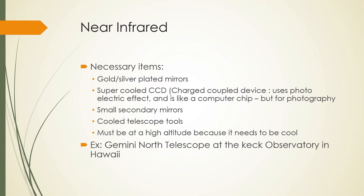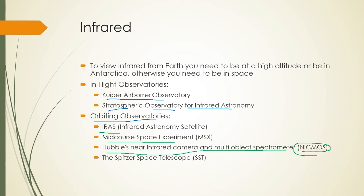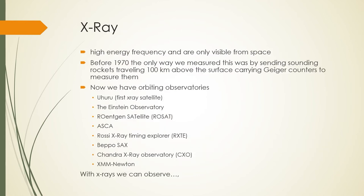Infrared is essentially seeing heat. Infrared observation from Earth requires a high altitude or location in Antarctica. Examples include flight observatories such as the Kuiper Airborne Observatory and the Stratospheric Observatory for Infrared Astronomy. Orbiting observatories include IRAS (the Infrared Astronomy Satellite), the Mid-Course Space Experiment (MSX), Hubble's Near Infrared Camera and Multi-Object Spectrometer (NICMOS), and the Spitzer Space Telescope.